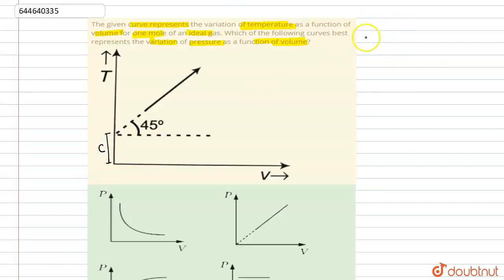So from this we can write that y equals mx plus c, where the value of c is, we can say is T₀. So from this we can write that y equals T, m is the slope, and x equals V.